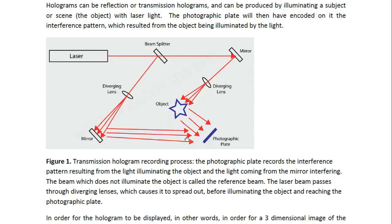So here's the process for recording a transmission hologram and what we have is a laser and this is the laser beam. This is a beam splitter. It splits the laser beam into two.